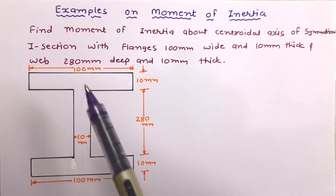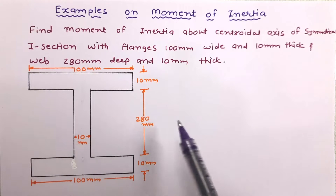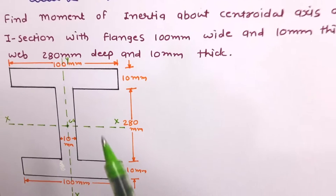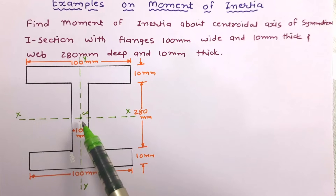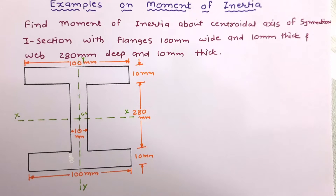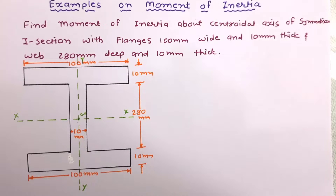The I-section is symmetrical about both the X-axis and Y-axis, so the centroid of the figure can be directly worked out. The centroid of the I-section lies at the point of symmetry. Since the I-section is symmetric about both XX and YY axes, x̄ and ȳ can be directly obtained.